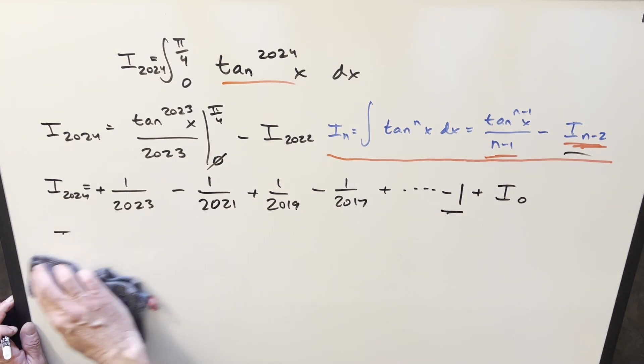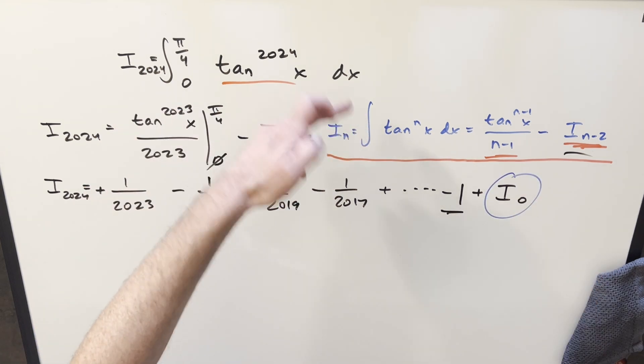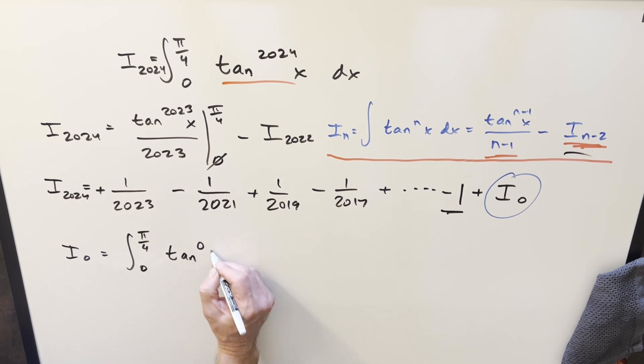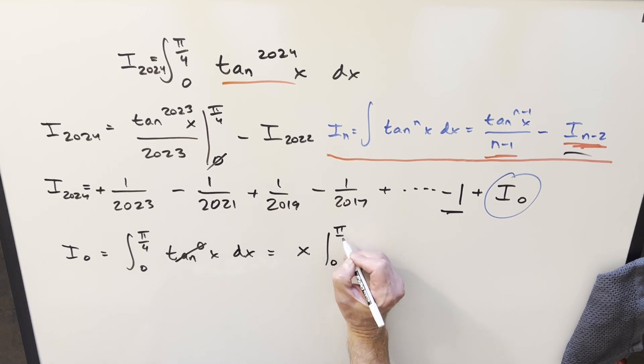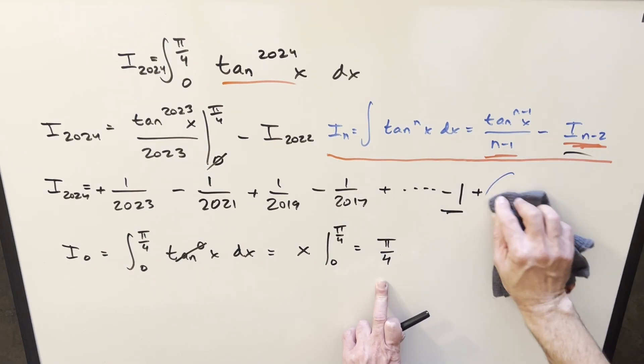So then all we need to do is calculate I_0 and see what that is. Well, that's pretty easy. I_0 is going to be the integral from 0 to pi over 4 tan^0 of x dx. But tan to the 0 is just 1, so all we need to do is integrate 1. Here we get x from 0 to pi over 4 and that's just going to be pi over 4.